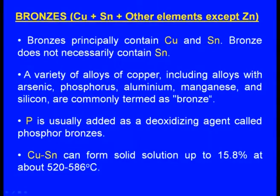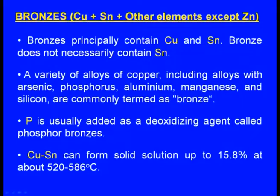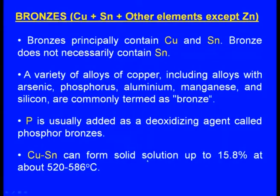A variety of alloys of copper, including alloys with arsenic, phosphorus, aluminum, manganese and silicon, are commonly termed as bronze. Phosphorus is usually added as a deoxidizing agent, called phosphor bronzes. Copper-tin can form solid solution up to 15.8 percent at about 520 to 586 degrees centigrade.